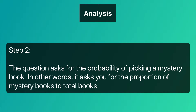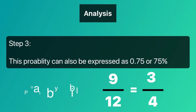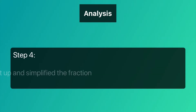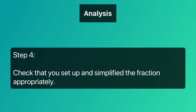Step two: the question asks for the probability of picking a mystery book — in other words, it asks for the proportion of mystery books to total books. The probability equals 9 over 12, which can be simplified to 3 over 4. This probability can also be expressed as 0.75 or 75 percent.